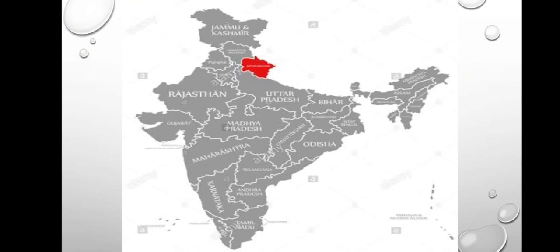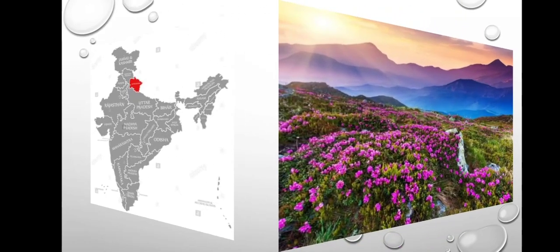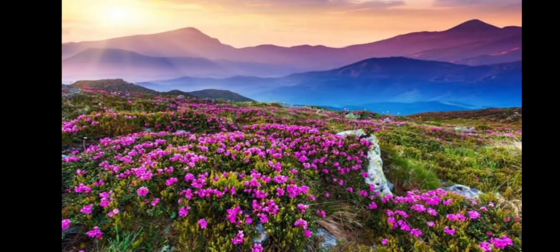This Valley of Flowers is between the Himalayan mountains of Uttarakhand. Children, look at the location of Uttarakhand on the map of India — the red colored state is Uttarakhand. It is between Himachal Pradesh and the neighboring states. The capital of Uttarakhand is Dehradun in winter season and Gairsain in summer season. So children, the Valley of Flowers is in the state of Uttarakhand, and it is very beautiful.